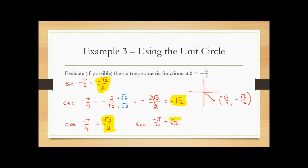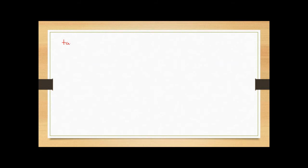Then tangent and cotangent. Tangent of -π/4 is sine over cosine: (-√2/2) divided by (√2/2). Notice they're the same thing, so you'd get 1, but we have that negative, so this comes out to -1. Cotangent is still -1 because when you take the reciprocal of -1, you're not changing the sign — you're just flipping the number. Since it's 1, the reciprocal of -1 over 1 is -1.